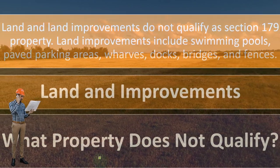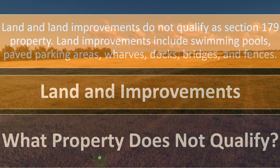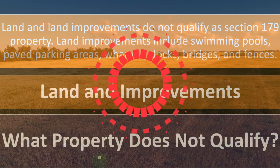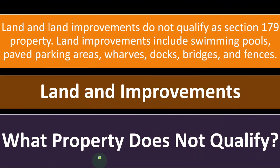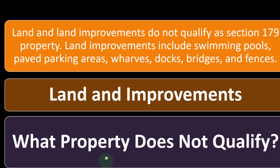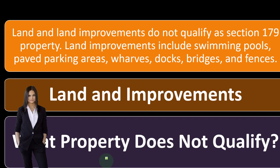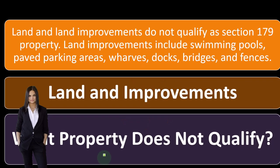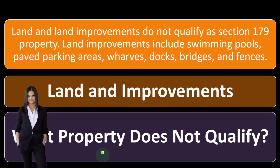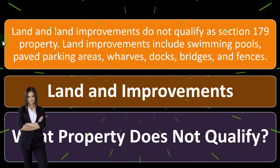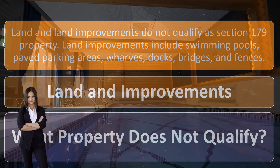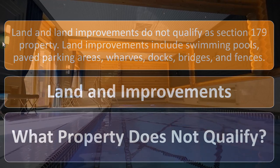Clearly, the amount allocated to just land is not depreciable because the land doesn't deteriorate in value, so you'd think it wouldn't be subject to 179 either. But then you've got improvements to land, which would deteriorate over time — and that's where it gets a little messy. So land and land improvements do not qualify for Section 179. Land improvements include swimming pools, paved parking areas, wharves, docks, bridges, and fences.